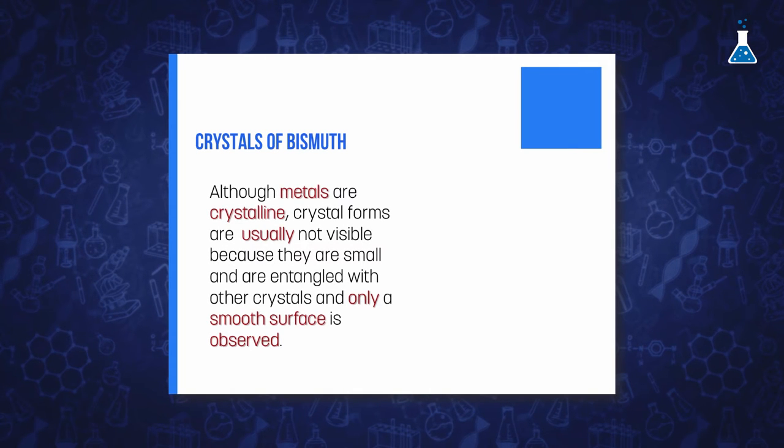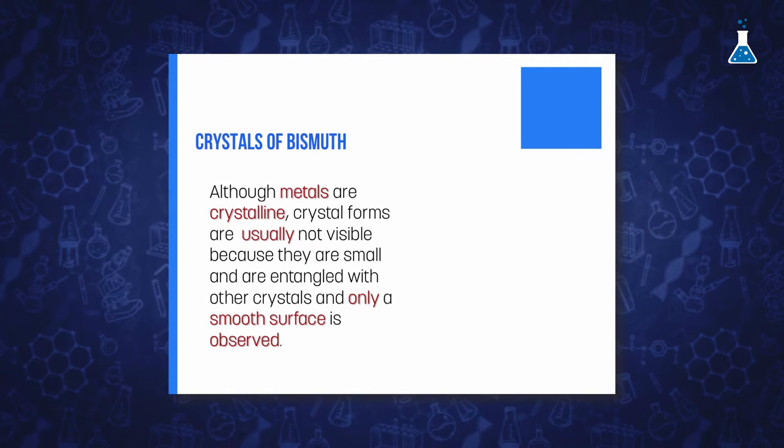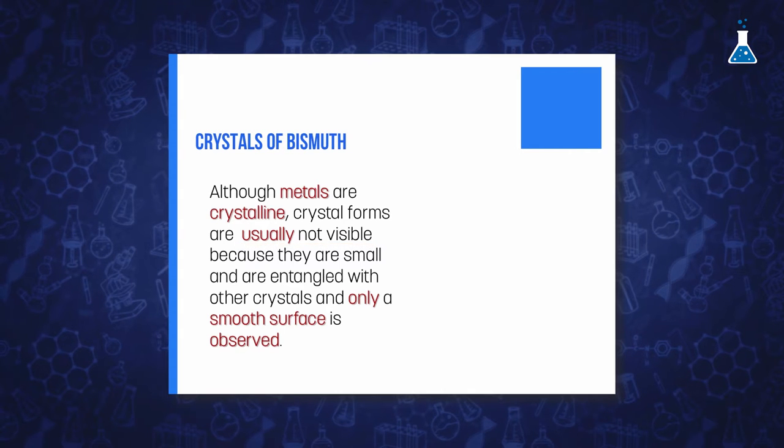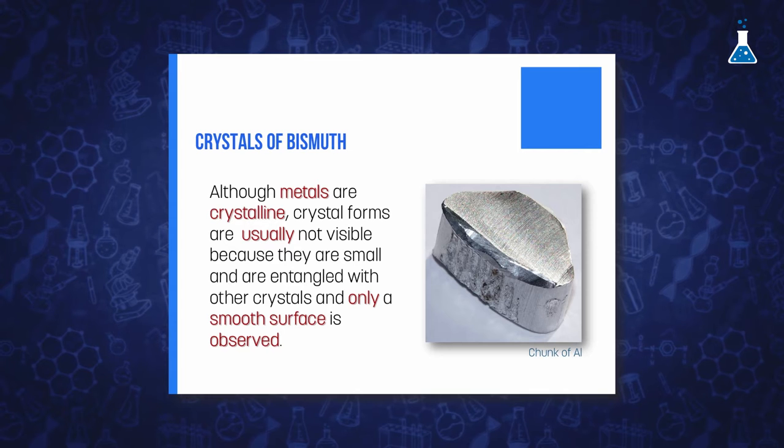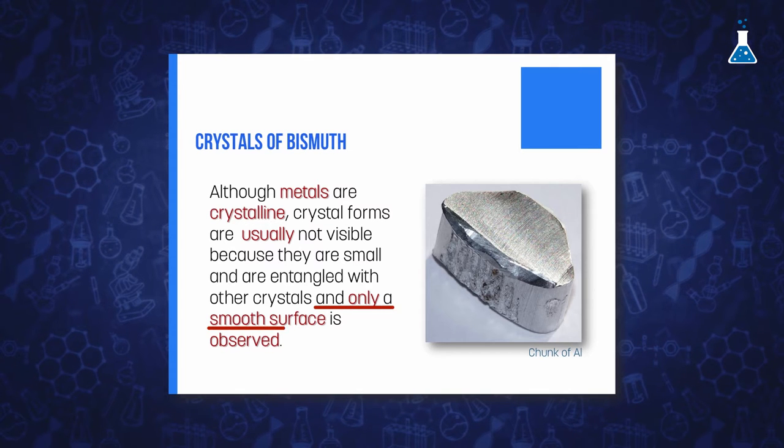In this first experiment, we are going to take advantage of this property of bismuth to melt the metal in order to form discrete and pretty crystals by subsequent cooling of the sample. We know that metals are crystalline, although the crystals inside the metal are normally not visible because they are small and entangled with other crystals. But with this experiment, it will be possible to observe crystal growing by simply melting the metal and then cooling the material slowly.